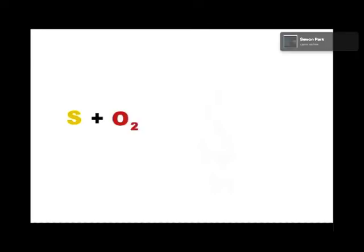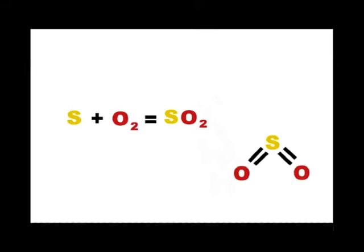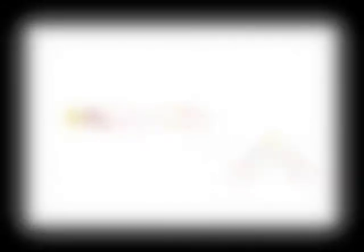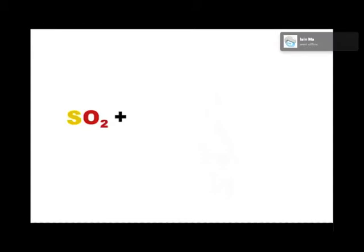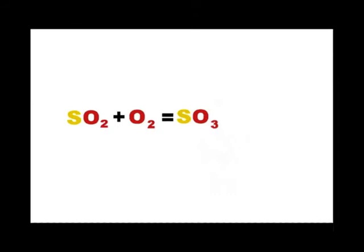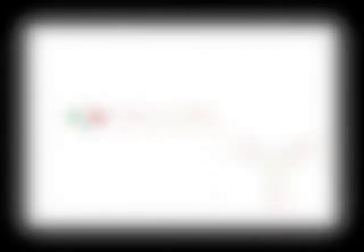When sulfur is released into the air, it chemically combines with oxygen to form sulfur dioxide (SO₂). When moisture or dust particles are present in the air, sulfur dioxide combines with another oxygen molecule to form sulfur trioxide (SO₃).